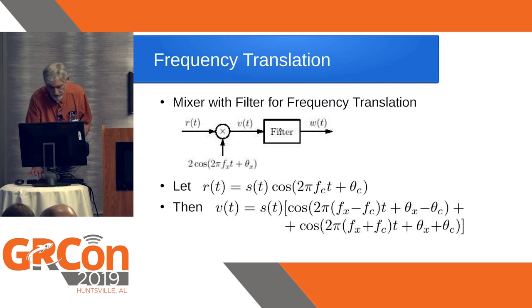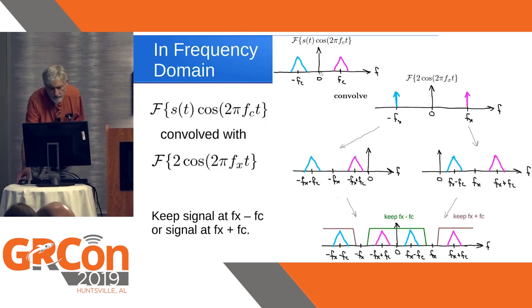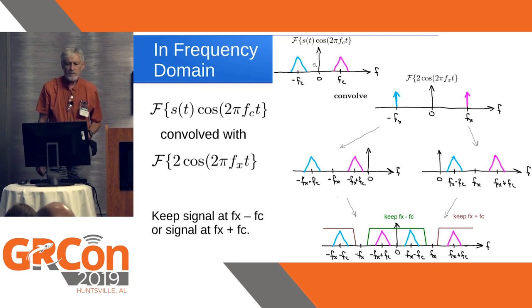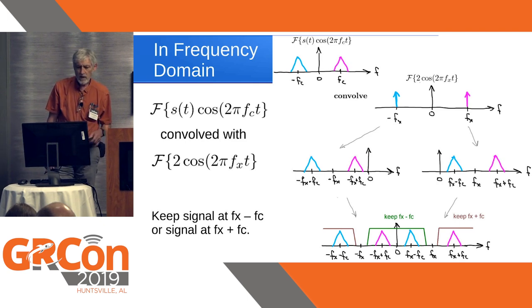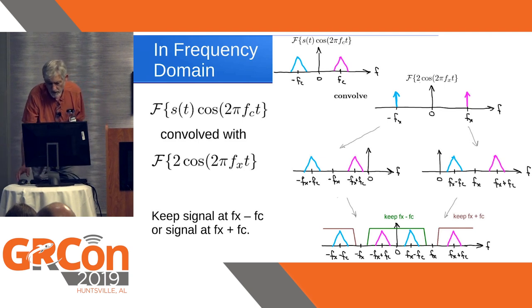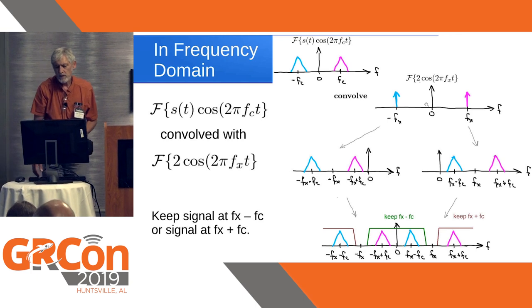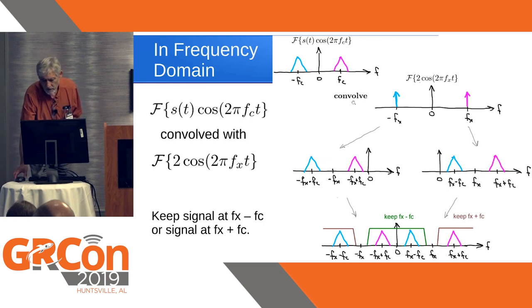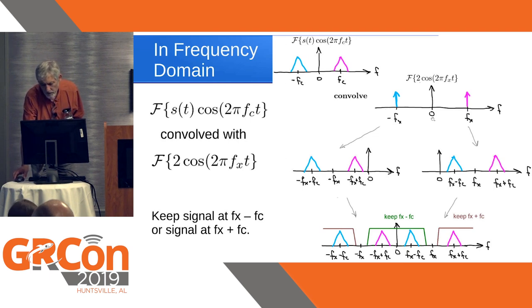Graphically, here is what this looks like. Up here is a signal that represents a radio signal, and I used different colors for the positive and negative frequencies so you can see how they combine. You multiply this with a mixer — which is just a sinusoid — and in the frequency domain that mixer is just two impulses. You convolve those together, so the radio signal gets placed at the locations of the impulses: shifted to the right to positive frequencies and shifted to the left.